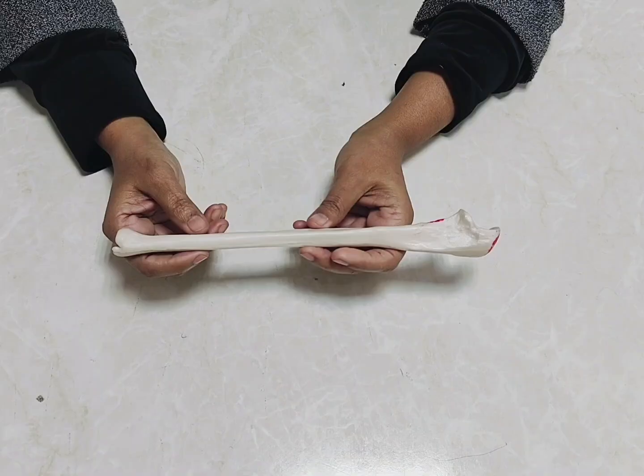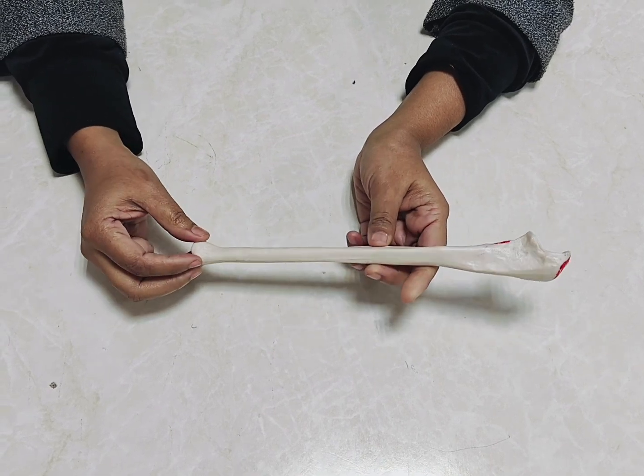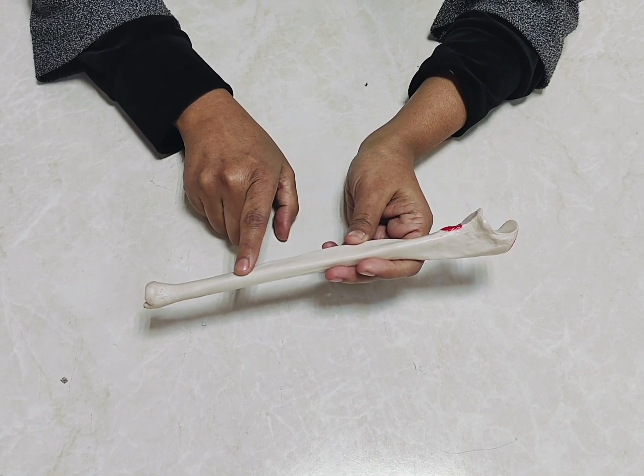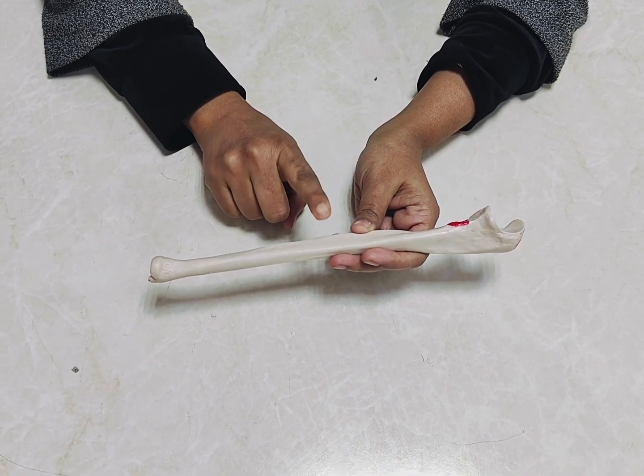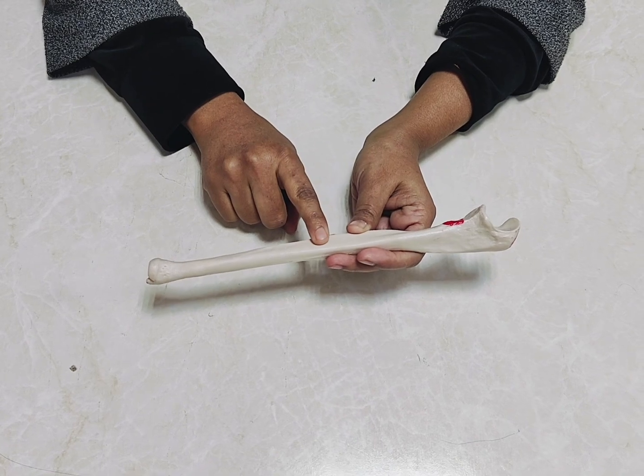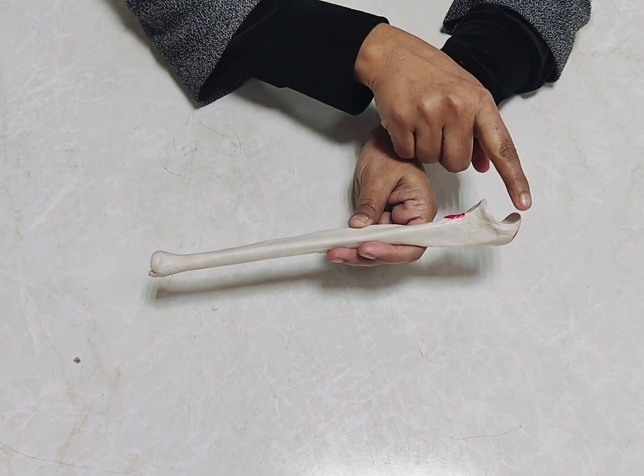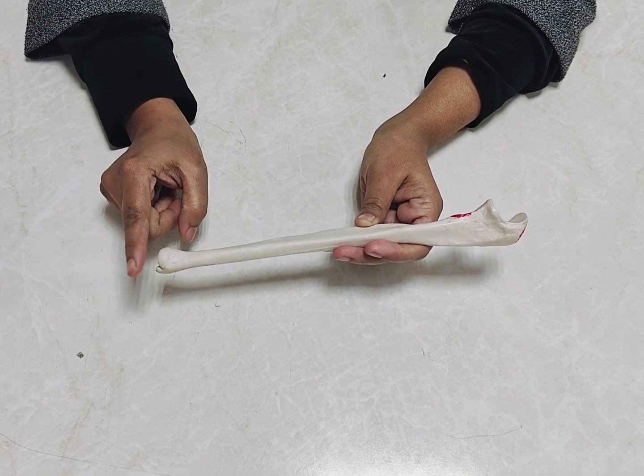Ossification-related questions we are also asking from ulna. As it is a long bone, the shaft diaphysis contains primary ossification center. Primary ossification center will appear at eight weeks of intrauterine life. The two ends contain epiphysis with secondary ossification centers. In case of lower end, it will appear at the age of six years.